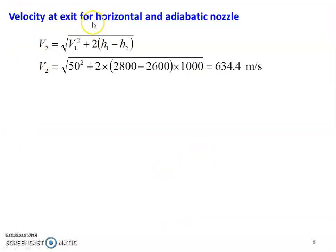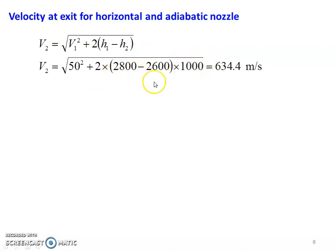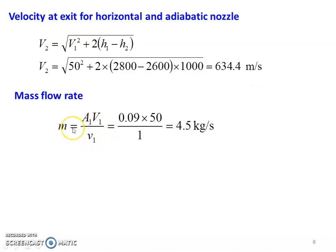We calculate velocity at the exit from the horizontal adiabatic nozzle. The equation is V2 equals square root of (V1² + 2·(H1 − H2)). Substituting: V2 equals square root of (50² + 2 into (2800 minus 2600) into 1000). This gives V2 equals 634.4 meters per second. Mass flow rate M equals A1·V1 divided by specific volume V1: 0.09 into 50 divided by 1 equals 4.5 kilograms per second.